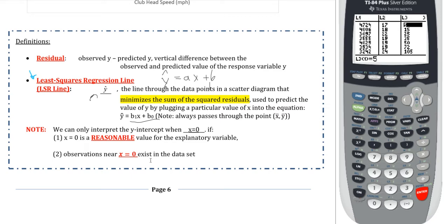However, the y-intercept is more of a question. A lot of the time, the y-intercept will not have meaning. We can only interpret the y-intercept when x equals zero is reasonable. The y-intercept is where the line intercepts the y-axis — that's when x equals zero. If x equals zero does not make any logical sense, then that means the y-intercept doesn't have any reason behind it, and most of the time that will be the case.